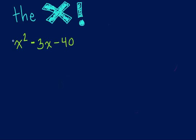So when there's not a number in front of the variable squared and it asks you to factor a trinomial, and a trinomial is three terms, then we can go ahead and we can call upon the X.